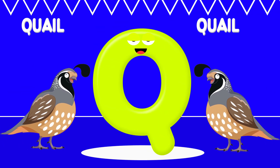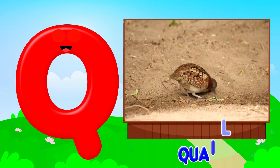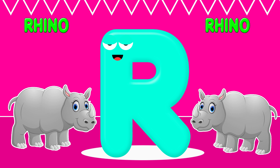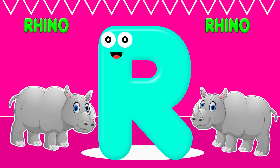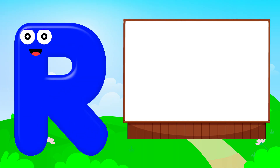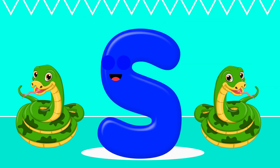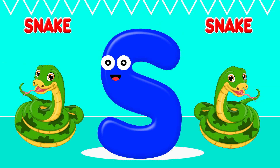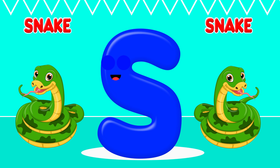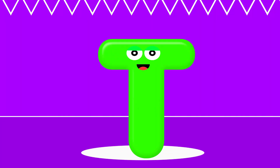Q is for Quail. Q, quail. Q, quail. R is for Rhino. R, R, rhino. R, R, rhino. R, R, rhino. S is for Snake. S, S, snake. S, S, snake. S, snake.